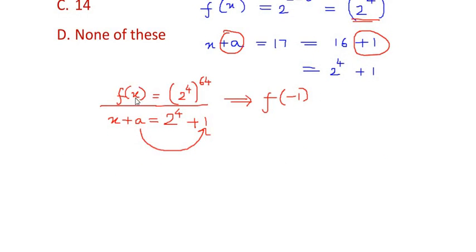Now since my f(x) was 2 to the power of 4 raised to 64, in place of x I'm going to substitute minus 1. So f of minus 1 is equal to minus 1 to the power of 64. And always remember, if the power is an even number, then if it is a negative base, it still changes to a positive number.